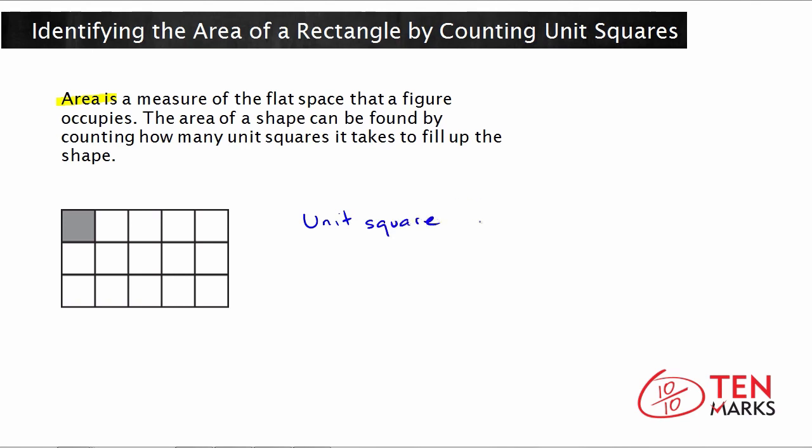Each unit square represents one unit of area. So each square equals one unit of area. So if we want to know how much area is occupied by just this one square, if we have one unit square, then we have one unit of area.